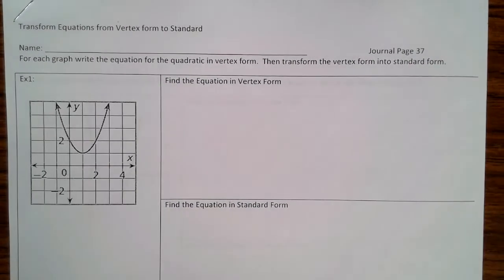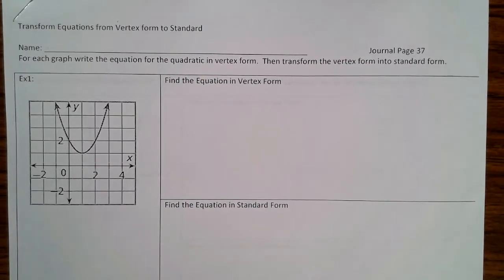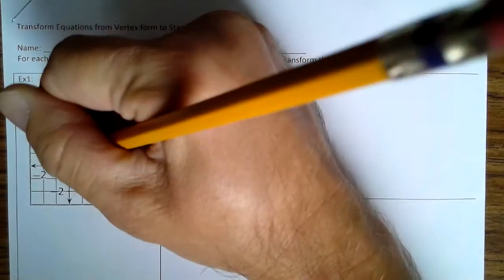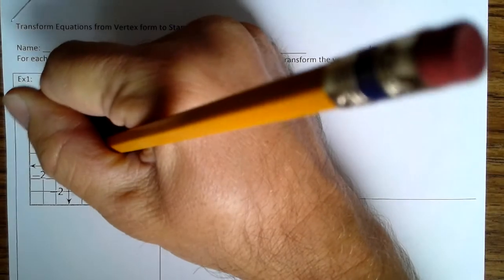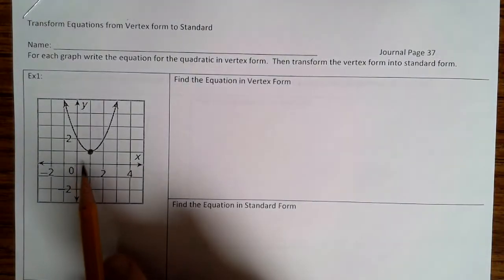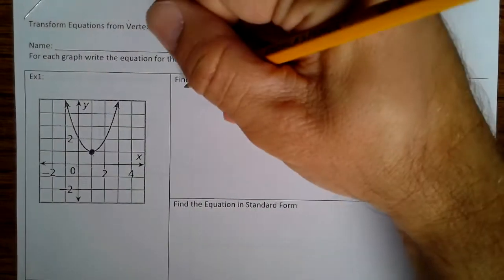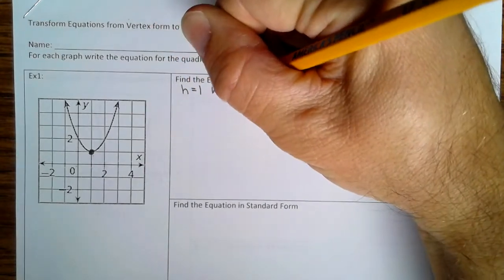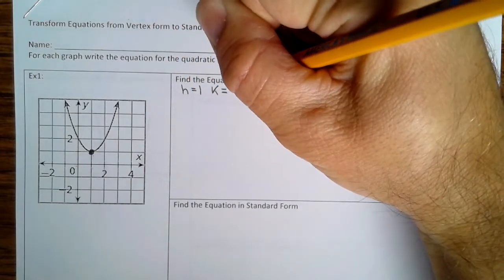General Page 37. Transform equations from vertex form to standard form. For each graph, write the equation for the quadratic in vertex form, then transform the vertex form into standard form. So Step 1, we need to identify the vertex, which is right here. It looks like that is (1, 1), so h equals 1, k equals 1.